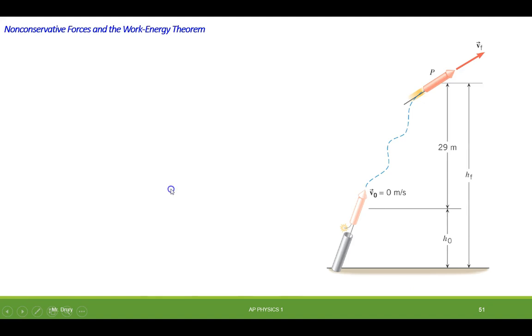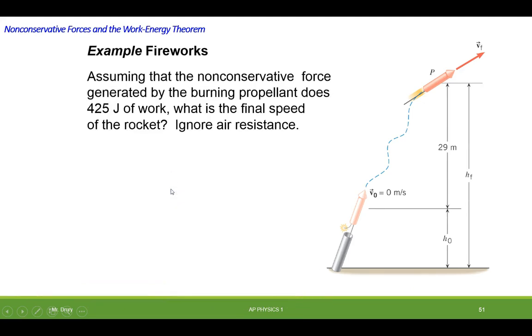Okay, so now we're going to try this problem with some numbers in it. Okay, we're going to say this rocket generates 425 joules of work, and that's being added to the system. It starts with a speed of zero, so it has zero kinetic energy initially. It starts at some height h sub zero, and it rises up 29 meters. And at that point it has some final velocity and some final potential energy.